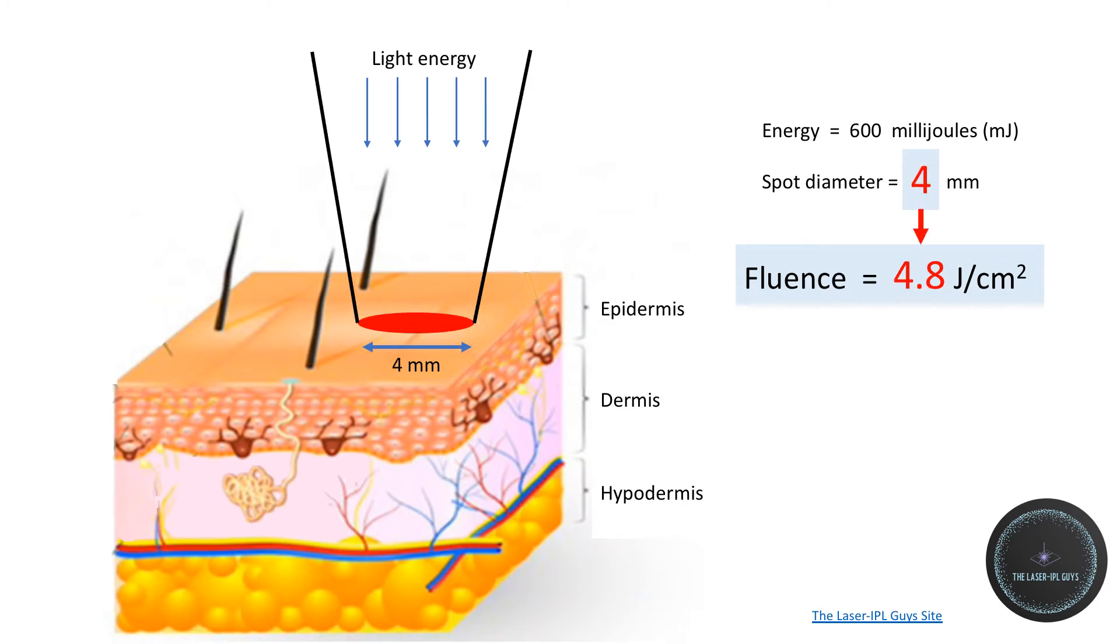If you decide to use the same energy in a smaller spot, say 4 millimeters, then the fluence will increase to 4.8 joules per square centimeter. Essentially you're forcing the same amount of energy into a smaller area.